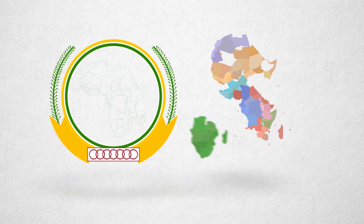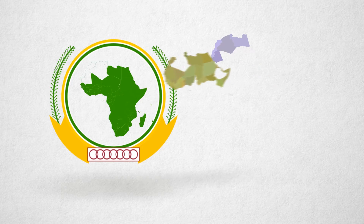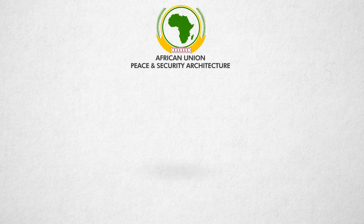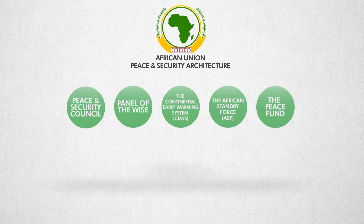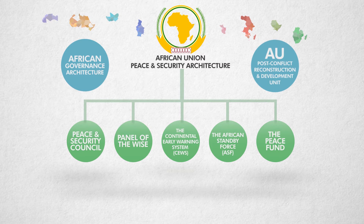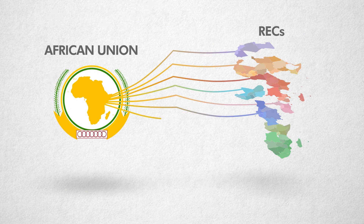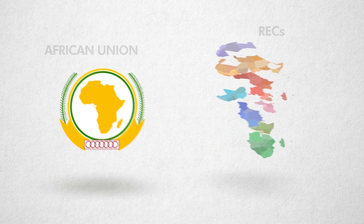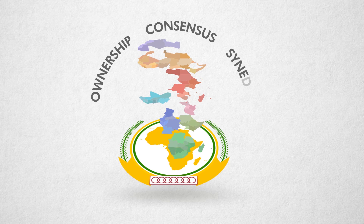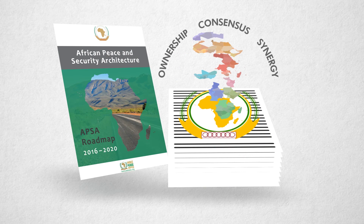Most importantly, the AU can play the role of the overseer, ensuring that responses are coordinated, maximize the strengths of different actors, and that frameworks are streamlined. There is a lot of potential for RECs to enhance the African peace and security architecture, but their limitations must also be understood. The AU is the authorized body to strengthen the coordination and enhancement of its RECs. Building on comparative advantages will strengthen ownership, consensus, and synergy between the AU and RECs — a guiding principle of the APSA 2016-2020 roadmap.